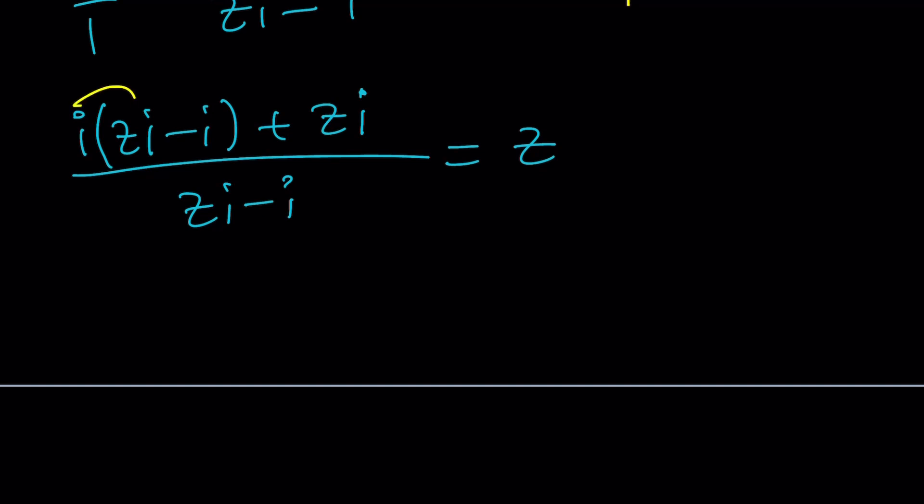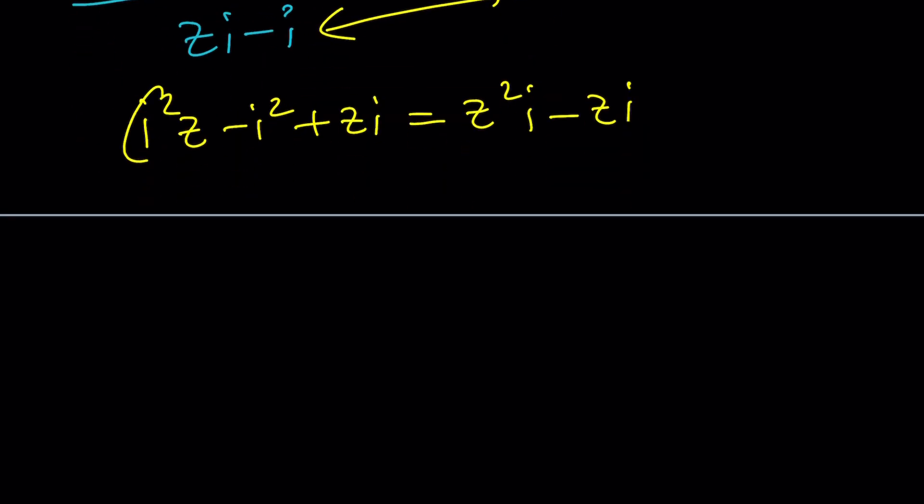Now let's go ahead and distribute. I squared Z minus I squared plus ZI. And I want to go ahead and cross multiply. Z squared I minus ZI. Great. I squared is negative one. So it's going to be negative one Z or negative Z. This is a positive one. This is a ZI. This is a I Z squared and then minus ZI.